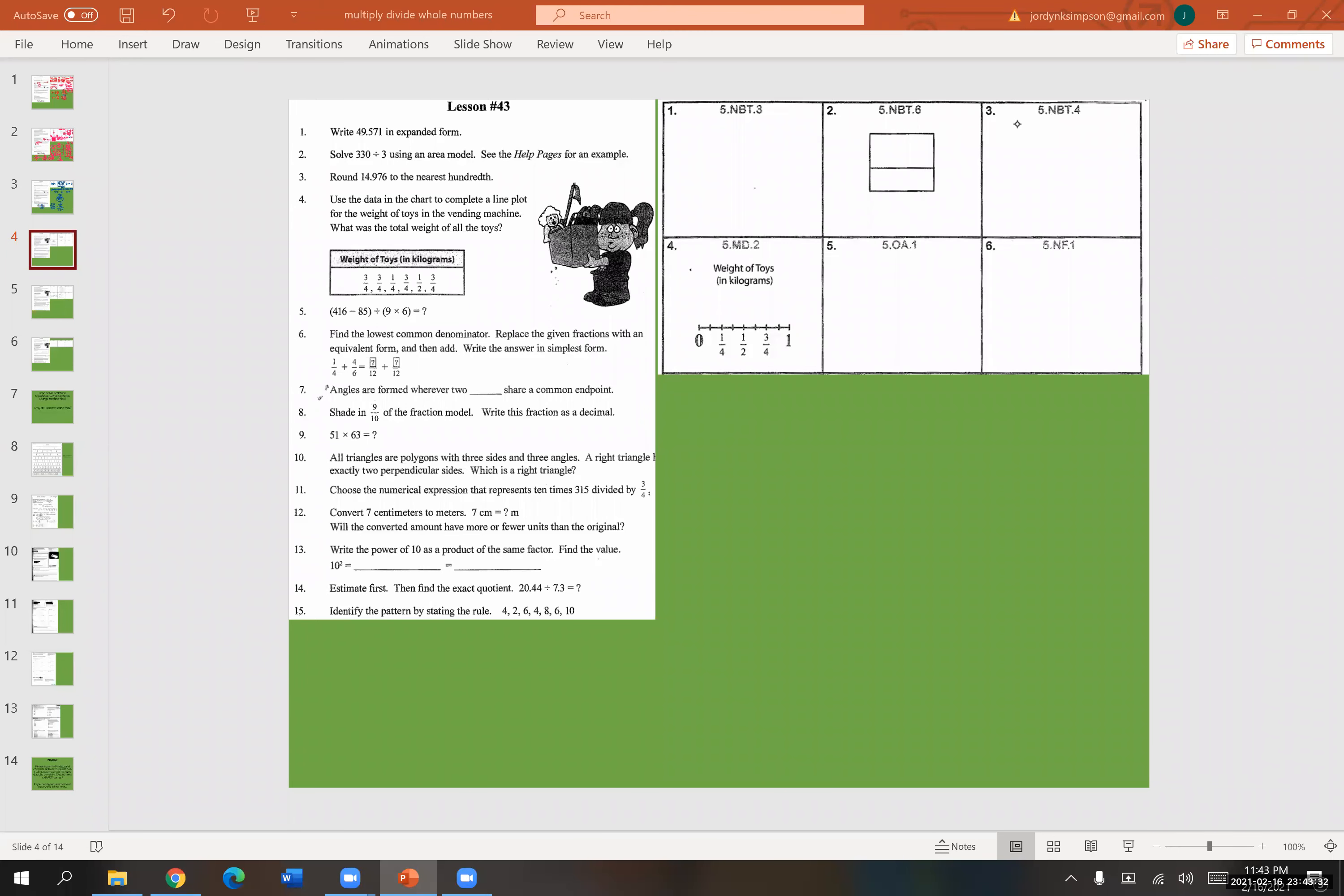All right, let's go ahead and do lesson 43. Let's start with number one. So we have 49 and 571 thousandths. They want this in expanded form. Remember expanded form is when you expand each of the place values and put that plus symbol in between each of them. So I'm actually going to go ahead and put the equal sign after this because once you were to add all of those, it would equal this.